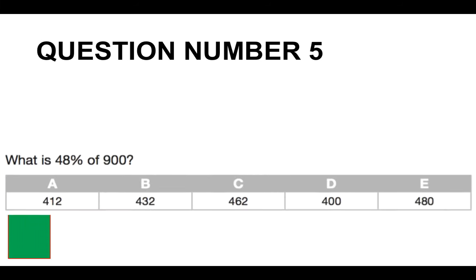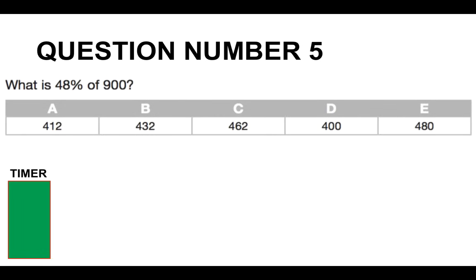Question number five. What is 48% of 900? A, B, C, D or E?